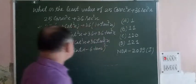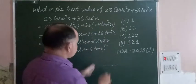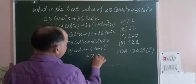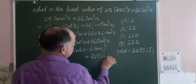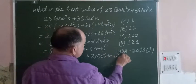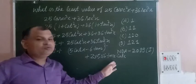We write it as complete square, so this is a² + b² - 2ab. We put here 2 times 5 into 6 into tanx into cotx, and tanx into cotx is 1.